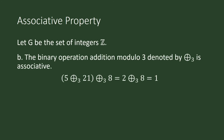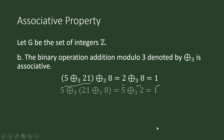For addition modulo 3, take three integers: five, twenty-one, and eight. Applying addition modulo 3 to five and twenty-one first: five plus twenty-one is twenty-six, and the remainder when dividing by three is two. Then two plus eight is ten, and the remainder when dividing by three is one. Now changing the grouping — applying addition modulo 3 to twenty-one and eight first: twenty-nine divided by three gives remainder two. Then five plus two under addition modulo 3 is also one. They are the same.